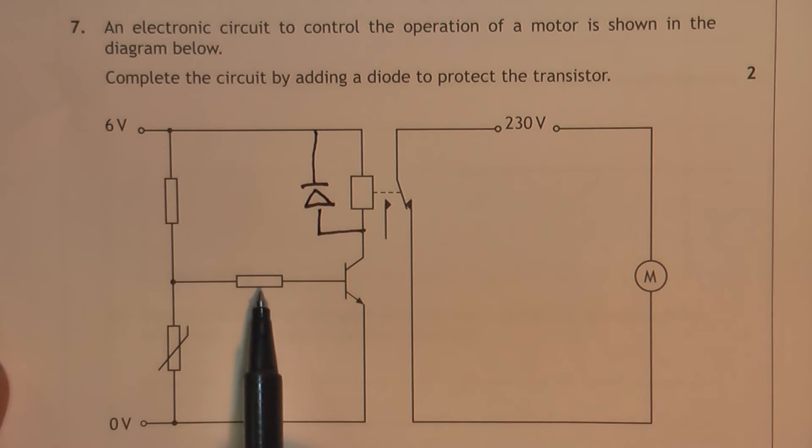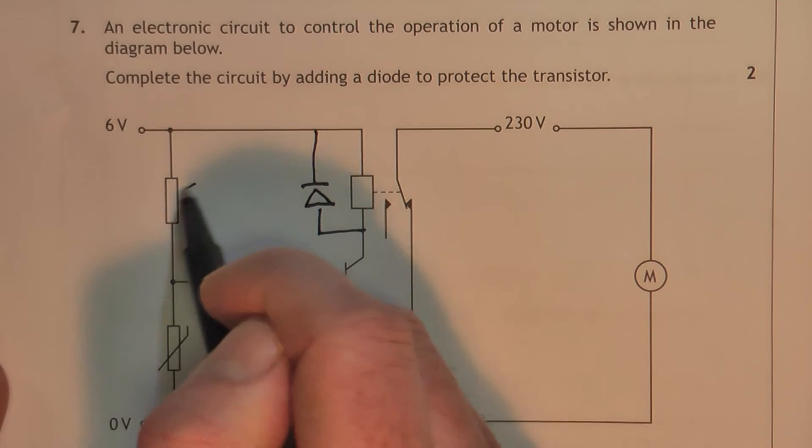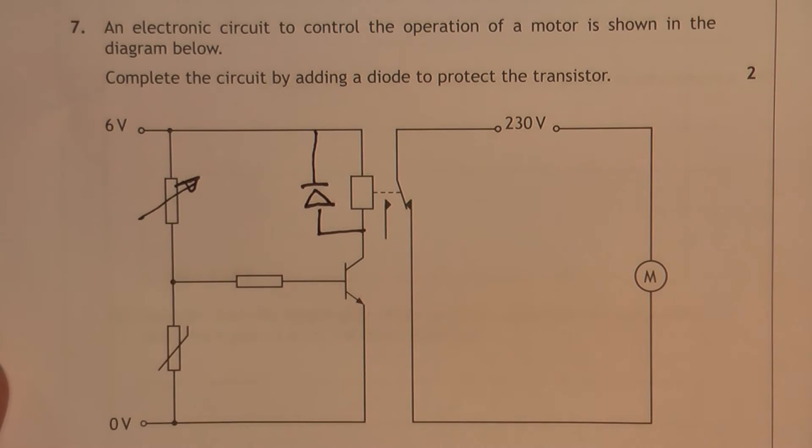And this base resistor, especially if that's a variable resistor, that variable could be adjusted down to 0 ohms. So that would mean if that resistor wasn't there, that would just be 6 volts straight onto the base. That could blow the transistor. So the diode protects the transistor from back EMF. This base resistor protects the transistor from large input currents.